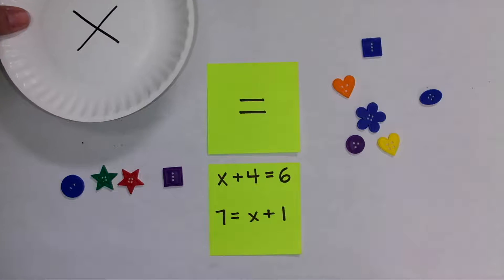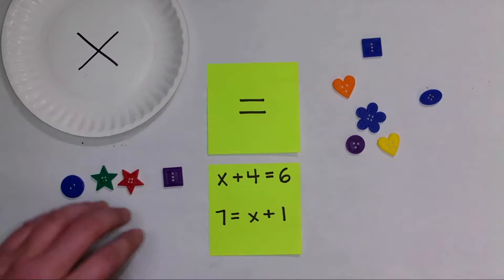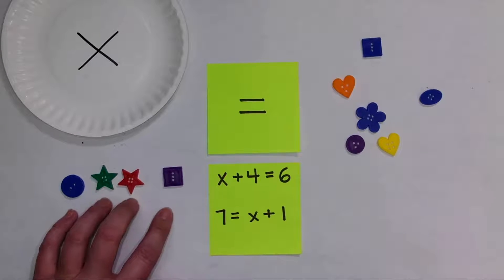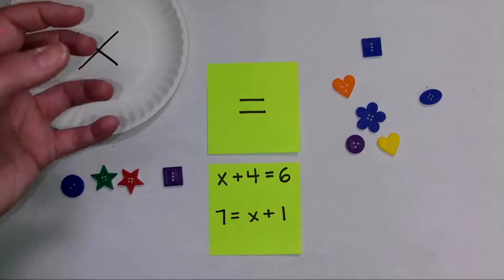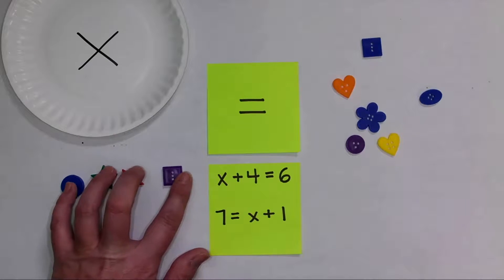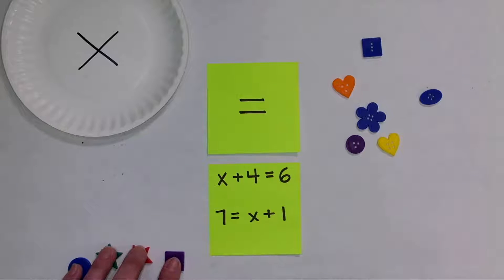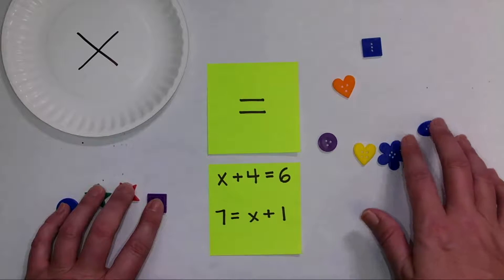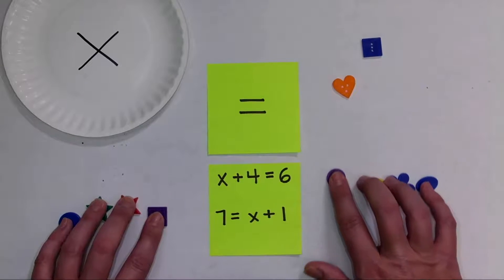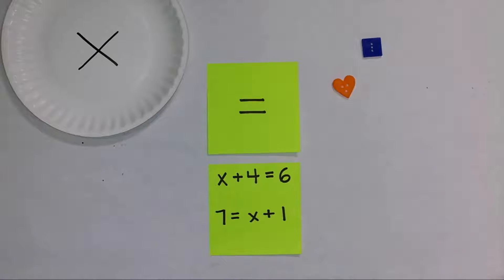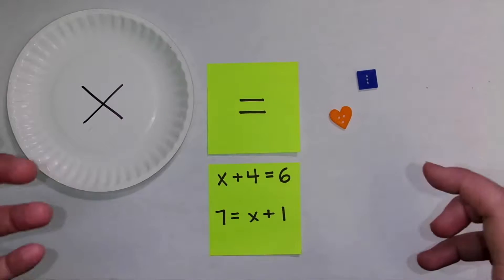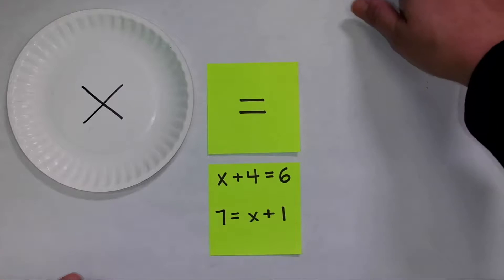Now we want to isolate this variable. To isolate it, I want to remove these four counters from this side of the equal sign. This is my constant and I want to remove it. I can subtract these four from this side of the equal sign, but remember, whatever I do to one side, I also have to do to the other. So I would subtract four over here as well. Then we have x = 2. That was a really simple way to solve that problem.